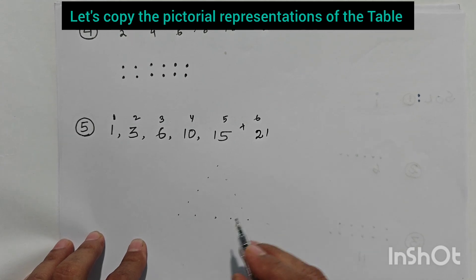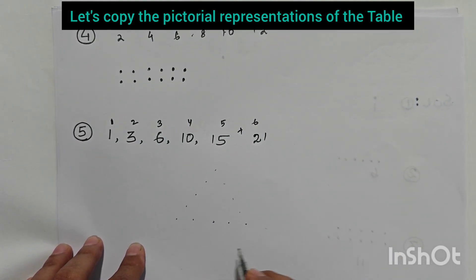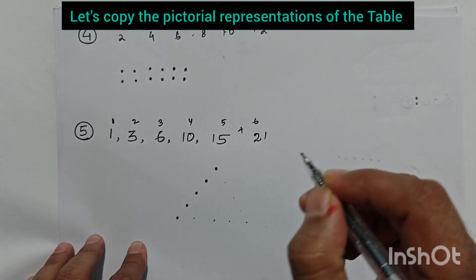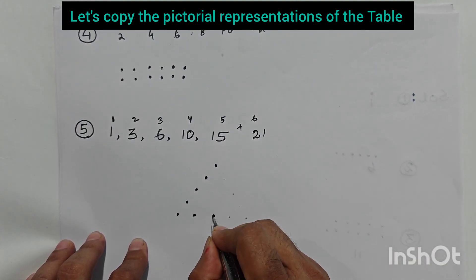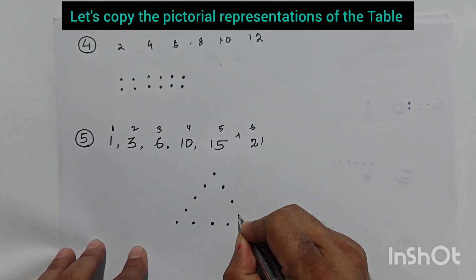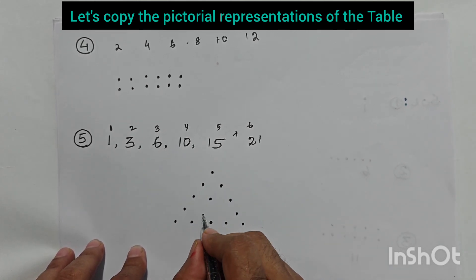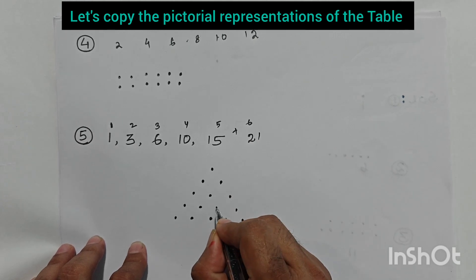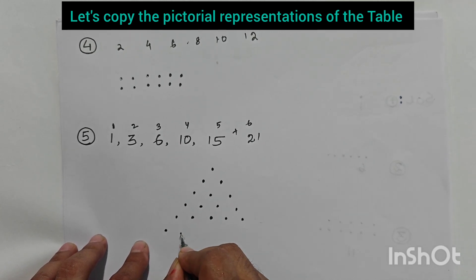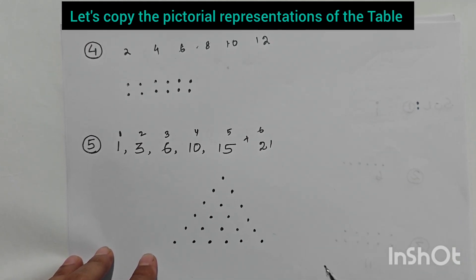We represent 21 in triangular form. First, we draw the existing 15 dots in triangular arrangement, then add one more row of six dots — one, two, three, four, five, six. This is the pictorial representation of the number 21.